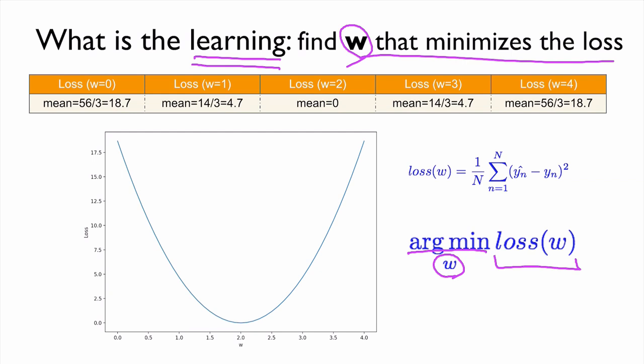So of course, in this case, it's so simple, so intuitive. Just look at this graph, we can identify what is the W that give us minimum loss. But imagine that we are using thousands, millions of weights.